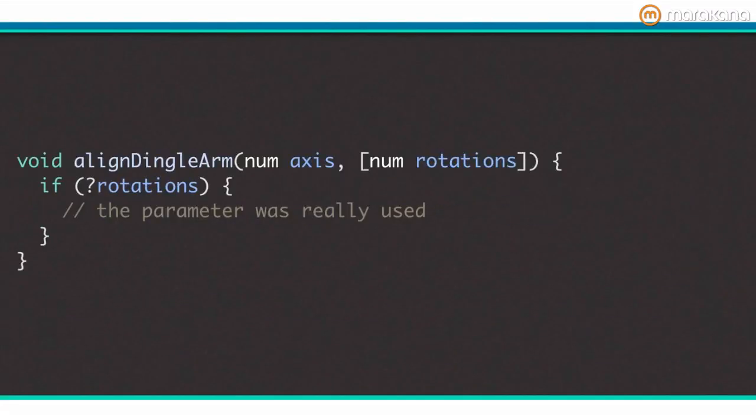This brings up a good question. In the case of an optional parameter without a default value, can you tell the difference between a user passing in null and not passing in anything at all? The parameter will be null either way. It turns out that Dart does indeed have a way to ask if an optional parameter was provided when the method was called. Just use the question mark parameter syntax. Here's an example.